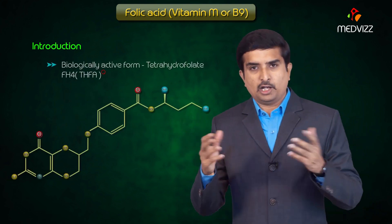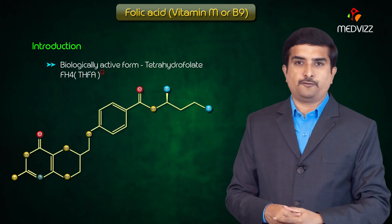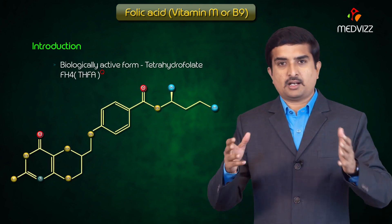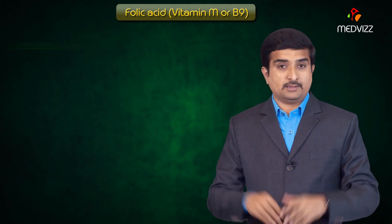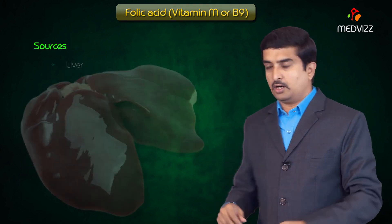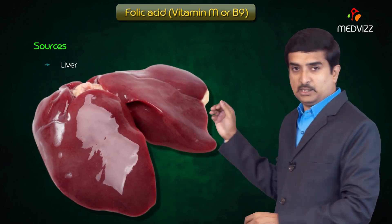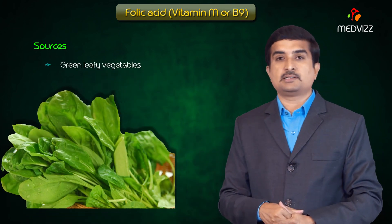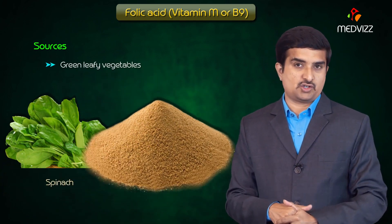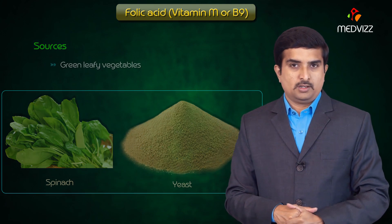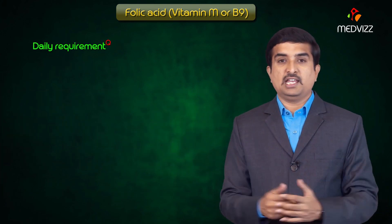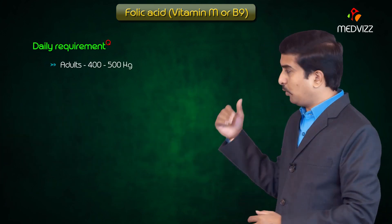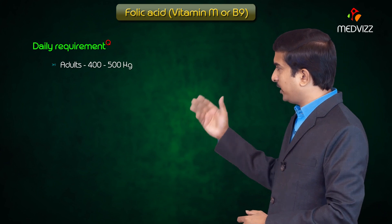The biologically active form of folic acid is tetrahydrofolate. Rich sources include liver, green leafy vegetables such as spinach, and yeast. Regarding daily requirements, in adults the daily requirement is approximately 400 to 500 micrograms.